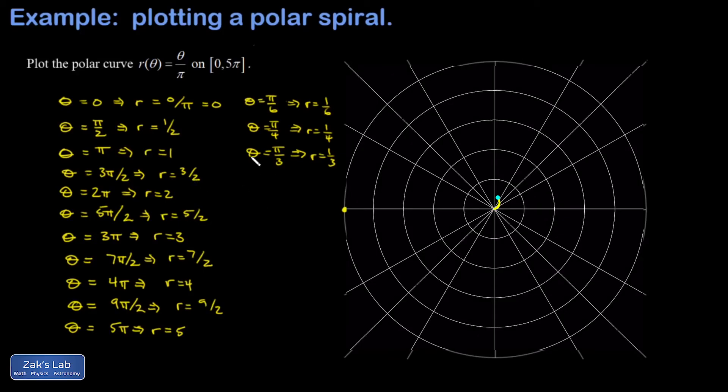We'll go ahead and import an image from a computer algebra system since it's going to do a lot better job than I can. And there's our basic polar spiral on [0, 5π].